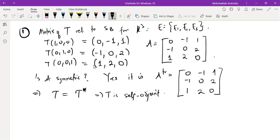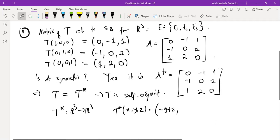And then we can conclude that T star is also a transformation from R cubed to R cubed, such that T star of (X, Y, Z) will give us exactly the same thing as we have for T: minus Y plus Z, minus X plus 2Z,